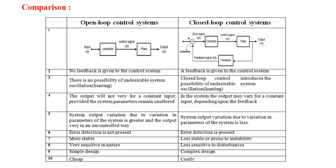The third point: in an open-loop control system there is no possibility of undesirable system oscillations or hunting. In a closed-loop control system, the closed-loop introduces the possibility of undesirable system oscillations or hunting. The fourth point: in an open-loop system the output will not vary for a constant input, provided the system parameters remain unaltered.